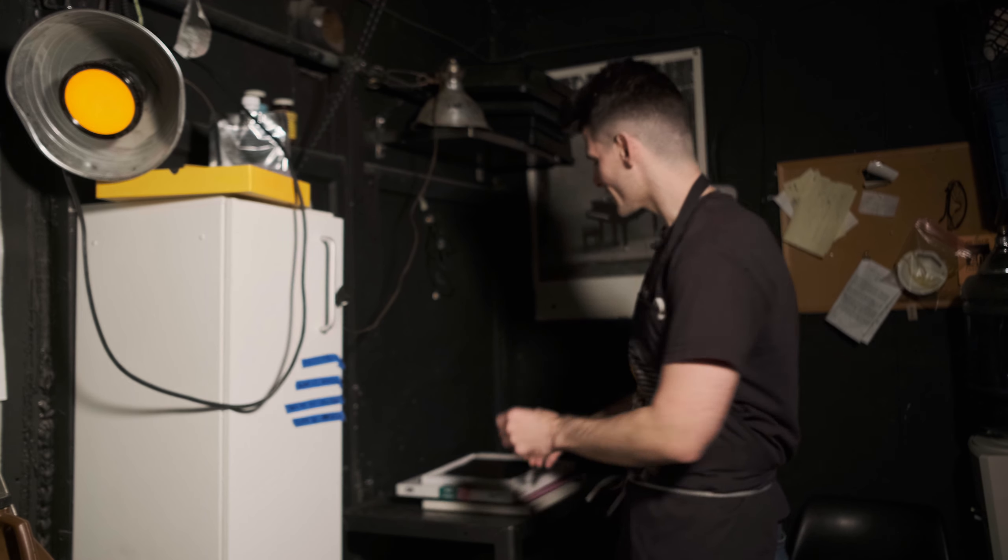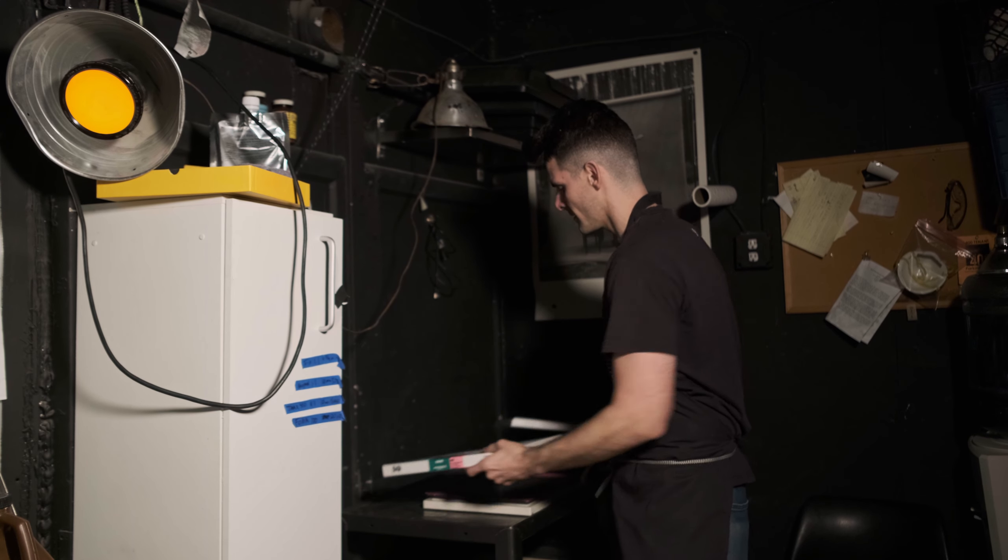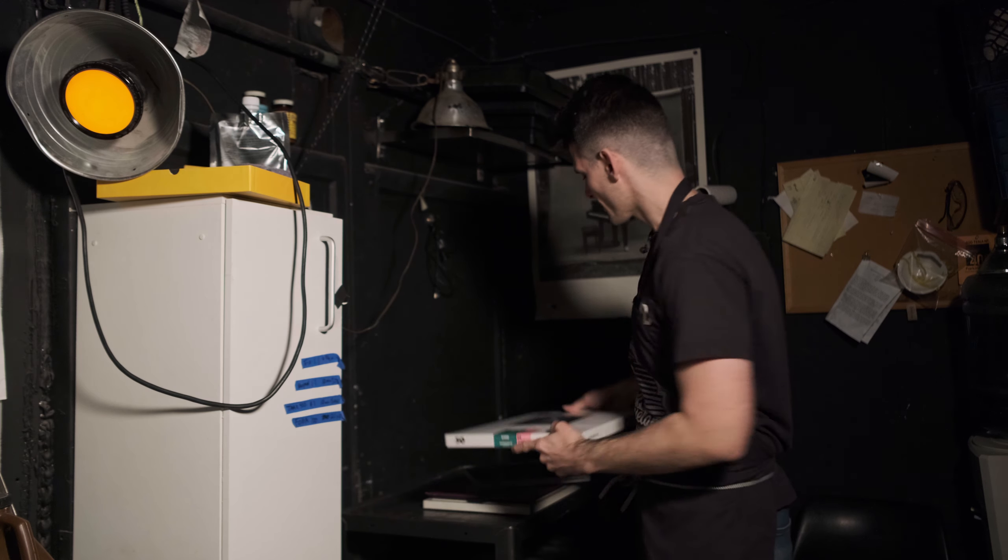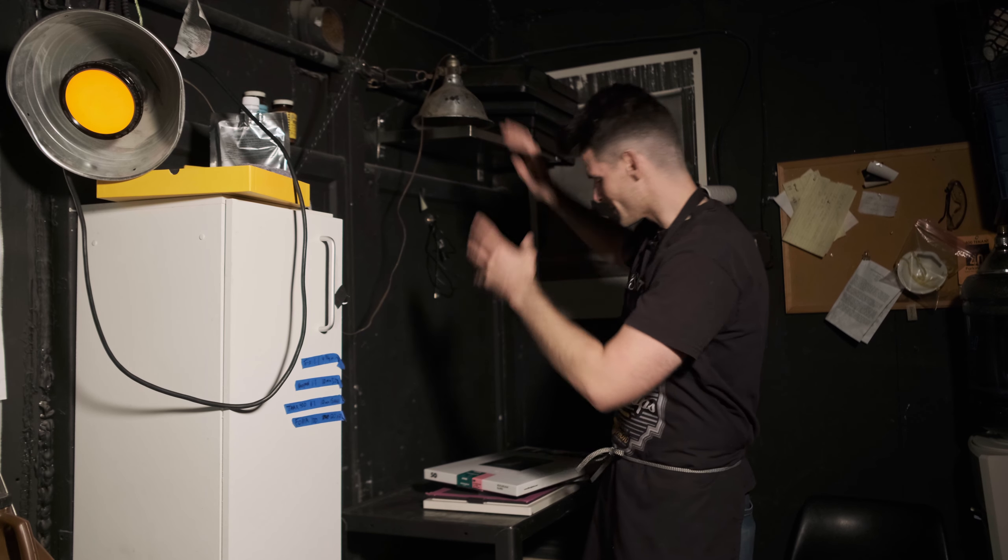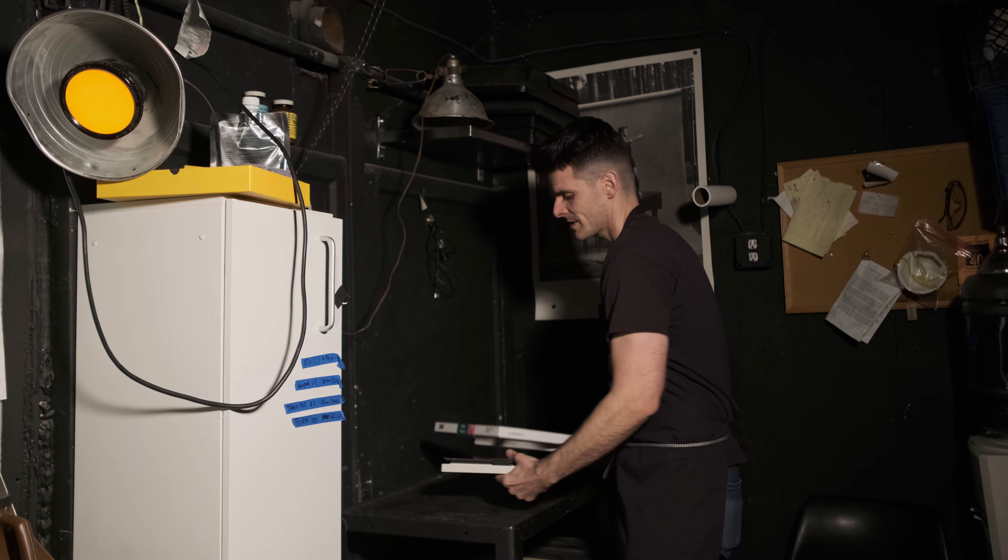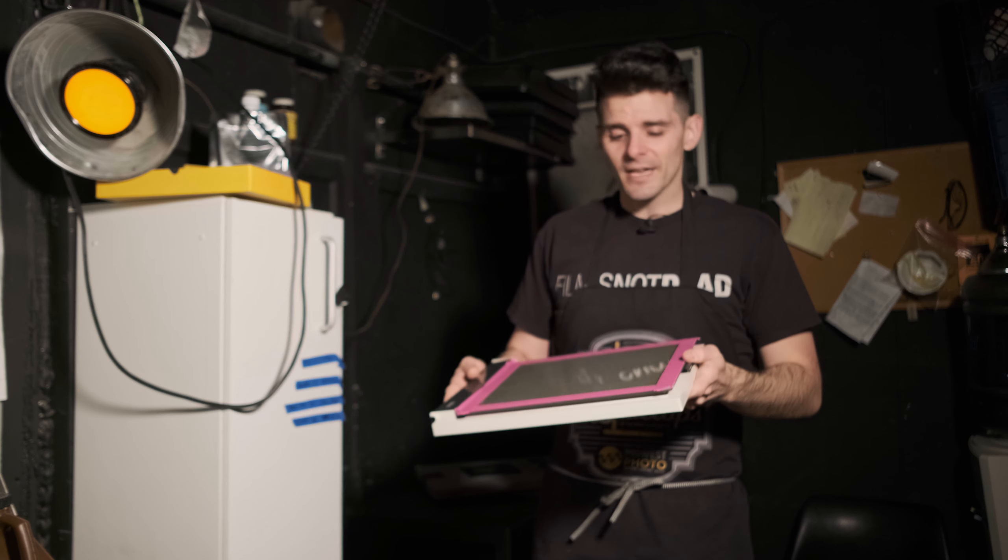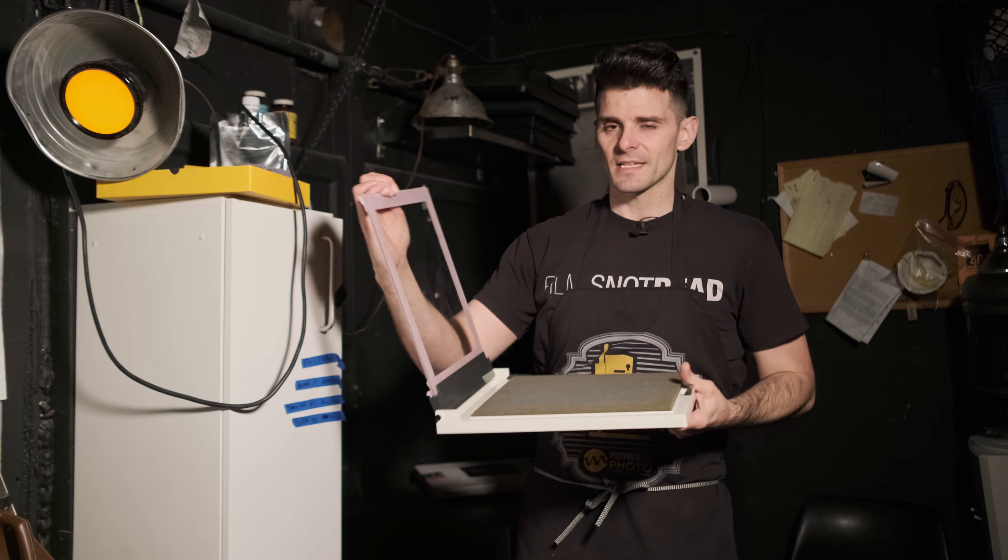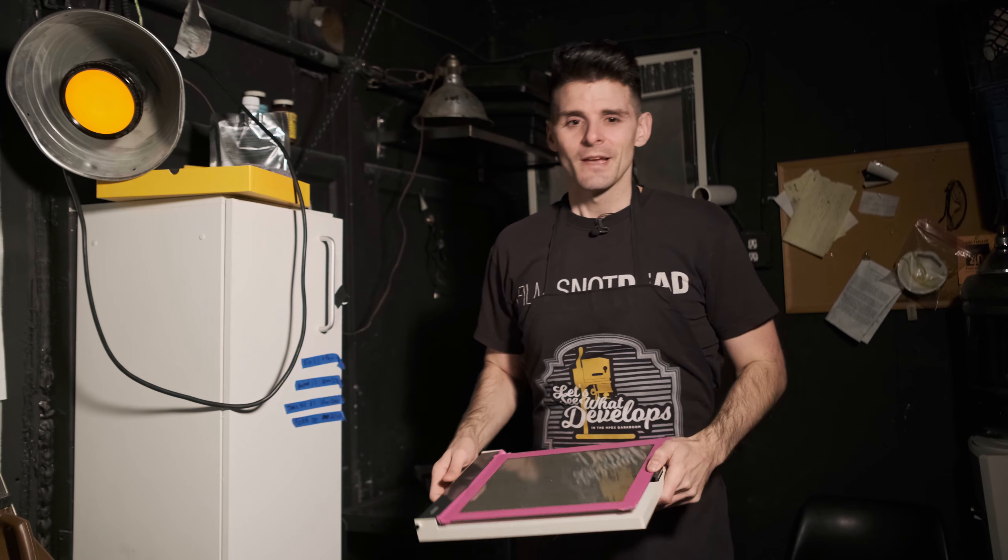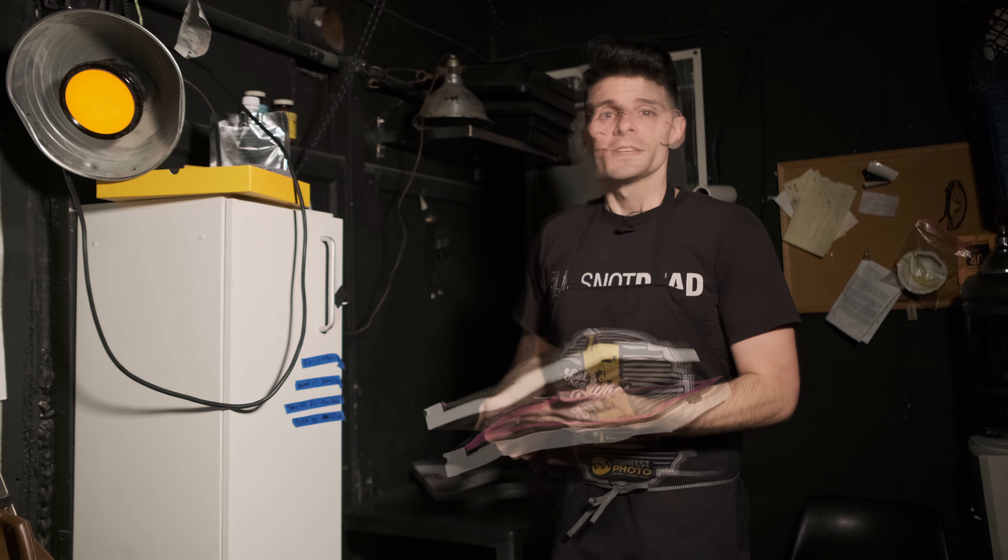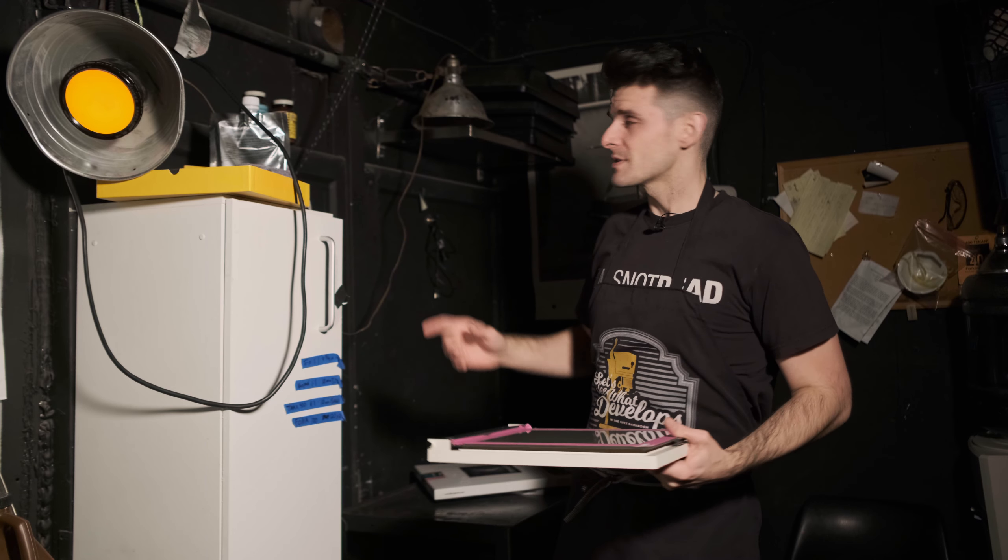Today we're going to make contact prints kind of like we did with last week's episode, except we're only going to use our negatives, our printing paper, a shop lamp, like a five dollar shop lamp. I think this one was a used one when I got it, and our contact printing frame. If you don't have a contact printing frame, you can literally just use a piece of glass. I mean, this is glass and foam essentially. It's taped over from last week, so I'm going to use this one, but we can just use a plate of glass as well. So same as the normal contact printing process, but we're going bare bones. Light, glass, negative, paper, that's it.